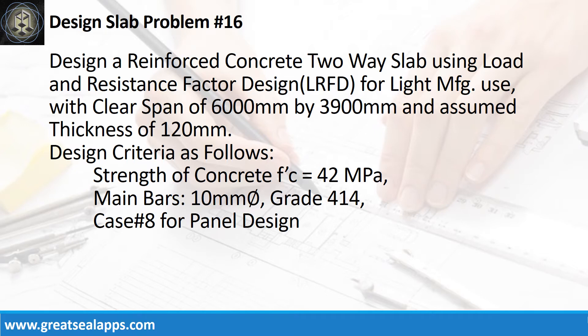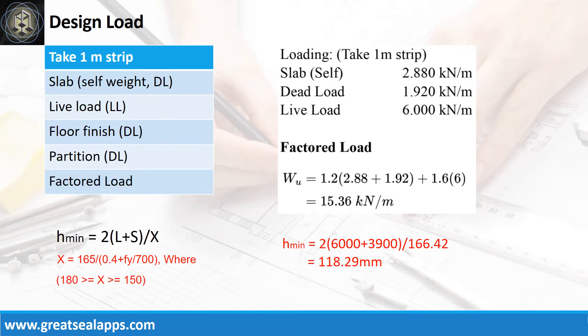Design criteria as follows: strength of concrete is 42 MPa; main bars are 10 mm bar, grade 414; case number 8 for panel design. The uniform load for a 120 mm thick slab is 2.88 kN/m. A light manufacturing live load is 6 kN/m. Other dead loads like floor finish and partition is 1.92 kN/m, for a factored load of 15.36 kN/m.